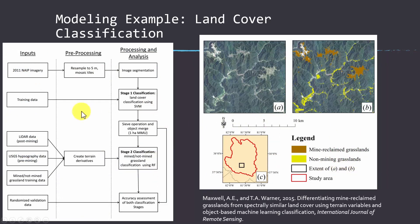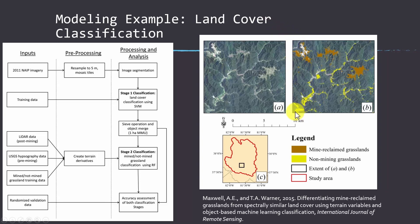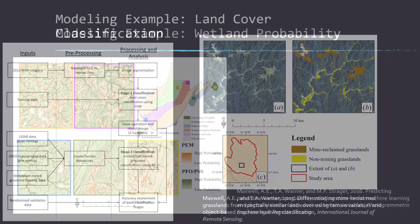Here's another example of a similar process. This used support vector machines and random forests — two different machine learning algorithms — to differentiate grassy or herbaceous areas that were mining-related, shown in brown, from areas not mine-related, shown in yellow. This is again a classification-type process.